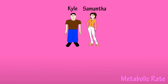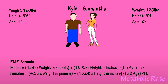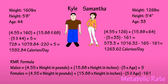Let's look at a couple of examples. Here we have Kyle and Samantha, and their metrics are shown here. Kyle is 44 years old, 5 foot 8, and weighs 160 pounds. Samantha is 33 years old, 5 foot 4, and weighs 126 pounds. The RMR equation for men is 4.55 times weight in pounds plus 15.88 times height in inches minus 5 times age plus 5. For women, the equation is 4.55 times weight in pounds plus 15.88 times height in inches minus 5 times age minus 161. When we plug in Kyle and Samantha's numbers, we see that Kyle's RMR is 1,592.84 calories per day, and Samantha's is 1,263.62 calories per day.